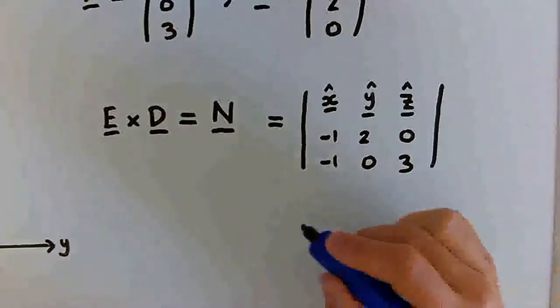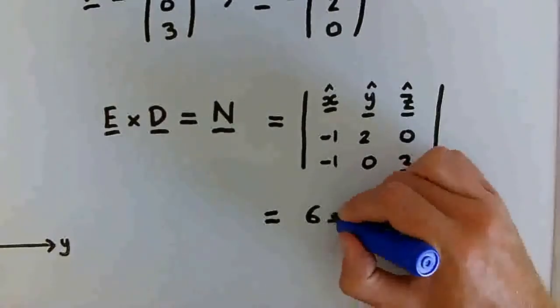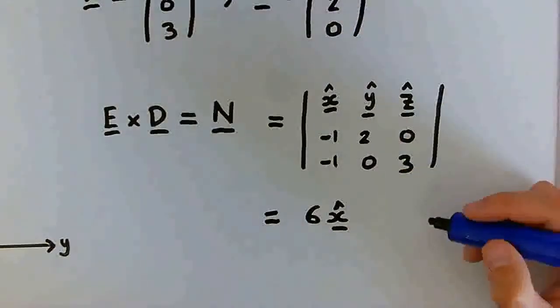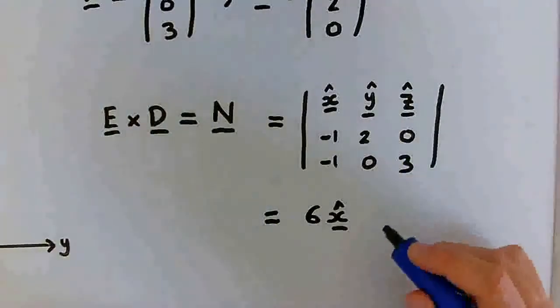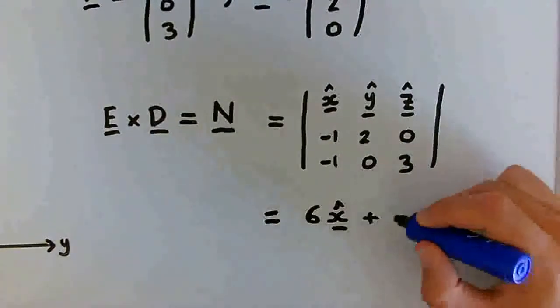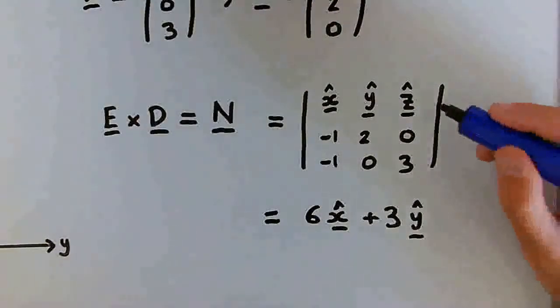This is quite straightforward. And it works out as 6 x-hat. And we have the minus sign in front of the y coefficient, so we have minus minus 3, which is plus 3 y-hat.